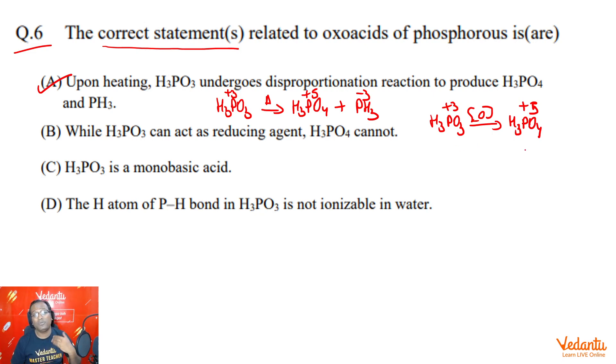But if we talk about H3PO4 acting as a reducing agent, it cannot be oxidized further. Why? Because its oxidation state of phosphorus is already maximum. So, this is correct that H3PO3 can be used as a reducing agent, itself will undergo oxidation, but H3PO4 cannot.